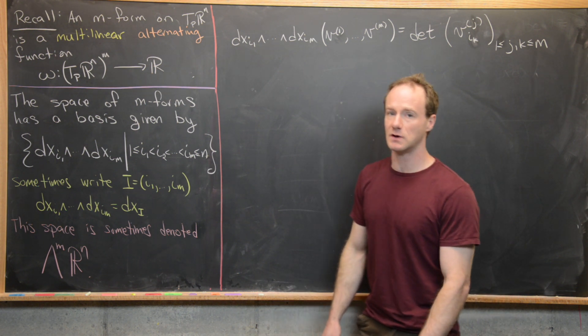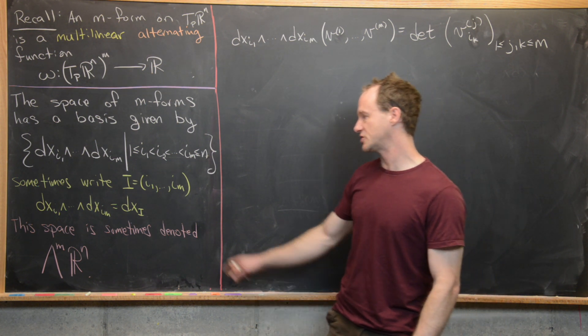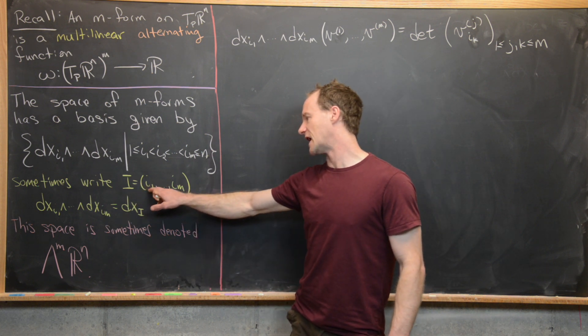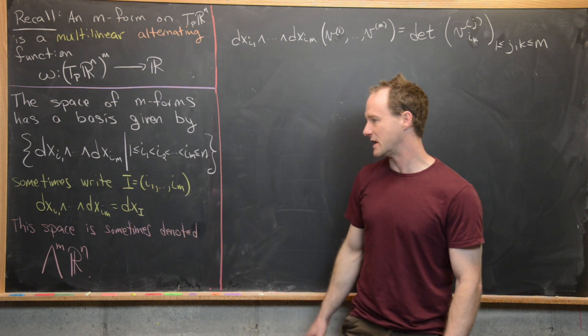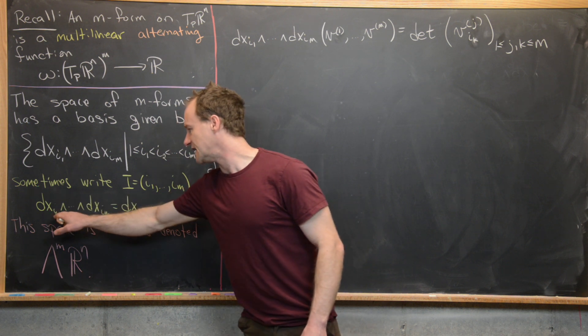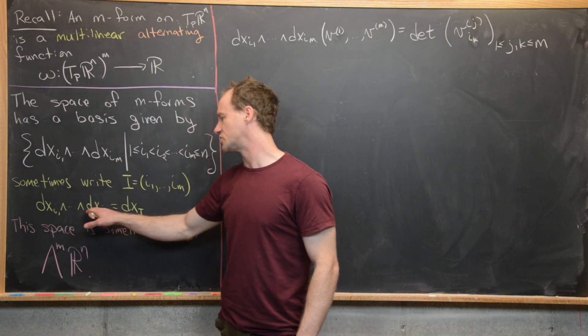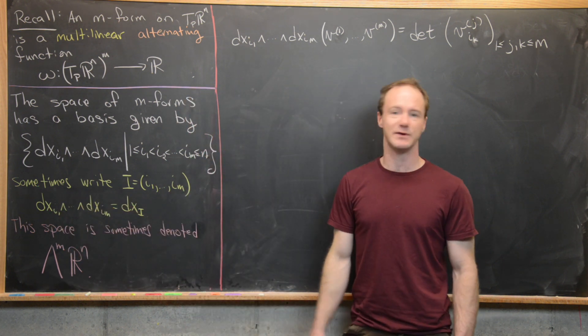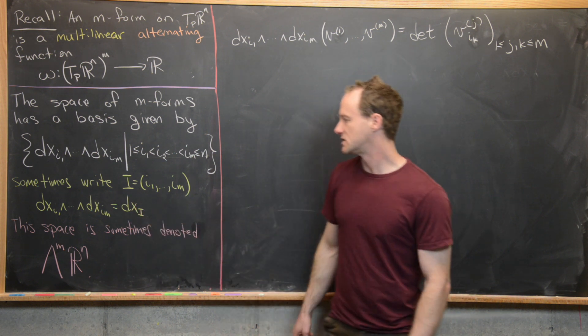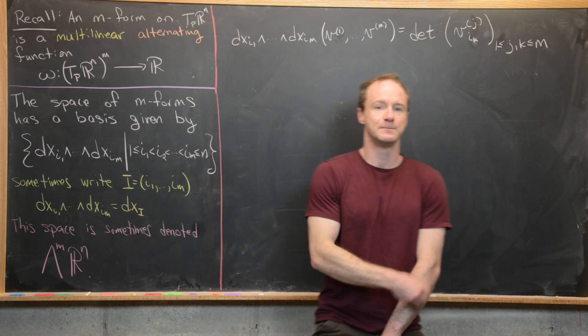Sometimes we use this thing called a multi-index to simplify the notation. So if I equals I sub 1 all the way up to I sub M, then we say that this DXI sub 1 wedge all the way up to DXI sub M is just DX subscript capital I.